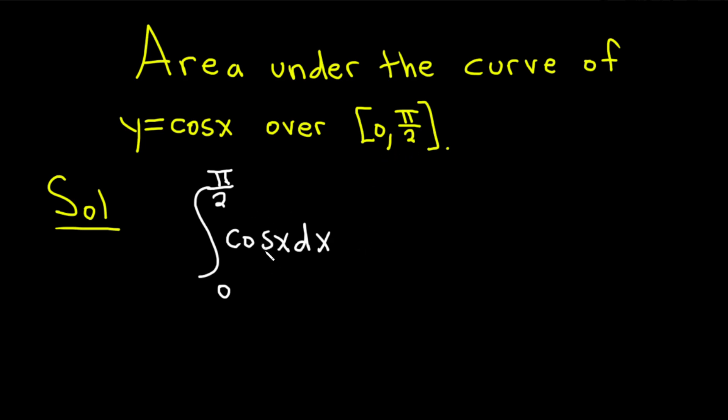When we're integrating cosine we want to think backwards. So what's a function whose derivative is cosine? Well sine, right? The derivative of sine is cosine. So when you integrate cosine you should get back sine. So this is sine x, and we're going from 0 to pi over 2.